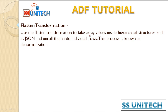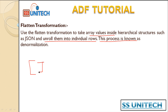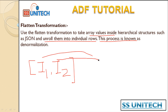The Flatten transformation is used to take array values inside hierarchical structures such as JSON and unroll them into individual rows. This process is known as denormalization. For example, if we have values in an array like item 1 and item 2, in the Parse transformation we converted these into two different columns, but in the Flatten transformation they will be converted into two separate rows.